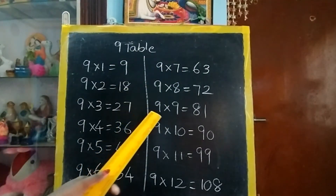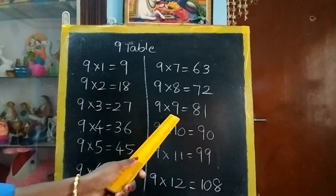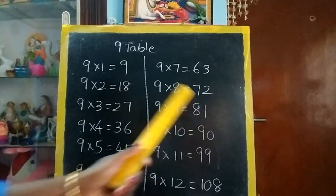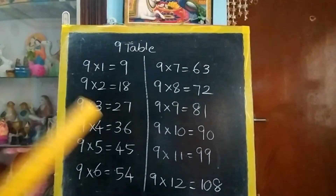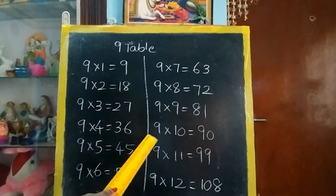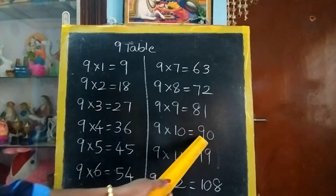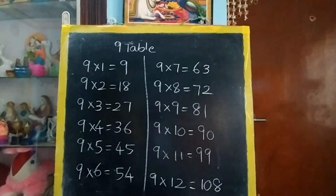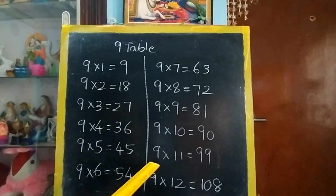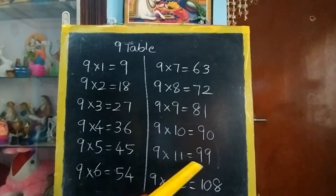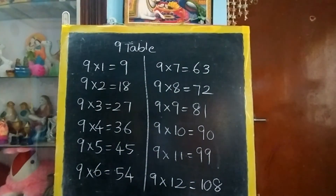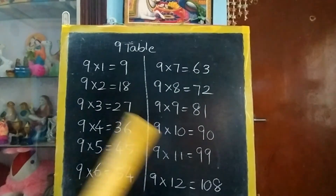9 9's are 81. 9 10's are 90. 9 11's are 99. 9 12's are 108.